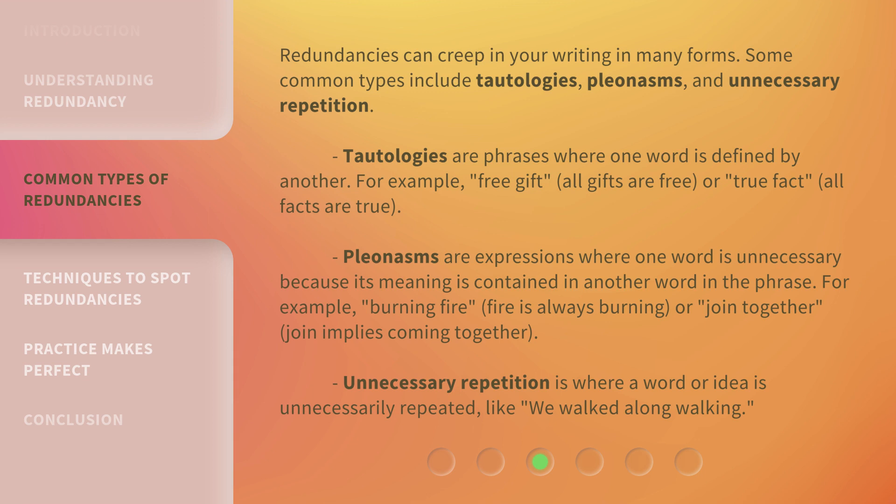Pleonasms are expressions where one word is unnecessary because its meaning is contained in another word in the phrase. For example, 'burning fire' — fire is always burning. Or 'join together' — join already implies coming together. Unnecessary repetition is where a word or idea is unnecessarily repeated, like 'we walked along walking.'